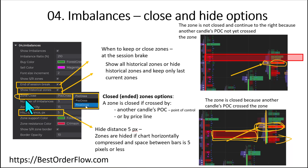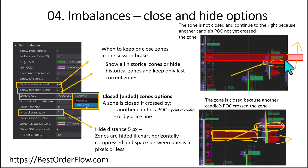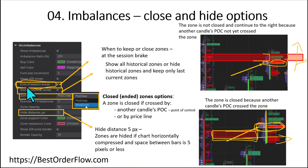We can close the zone with the point of control, or the zone will be closed if the price moves over the zone — it will no longer keep going to the right and will be closed. There are other options to close zones, for example at the end of the session, so you no longer see the zone continuing into a new session. You may also select to show all historical zones.